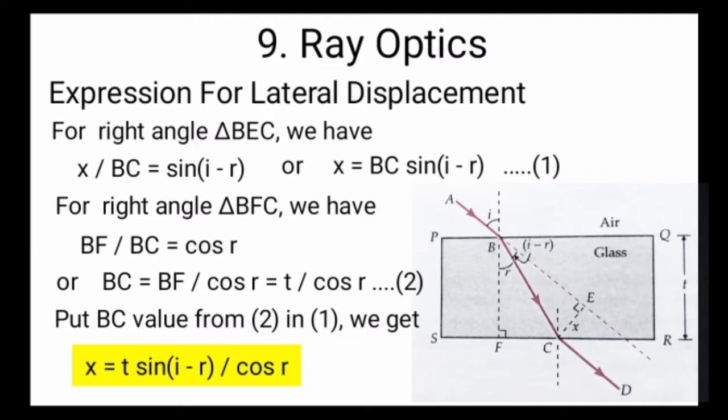The expression for lateral displacement can be seen in this diagram. PQRS is a rectangular glass slab whose width is t. The incident angle is denoted by i and the refracted angle is denoted by r. We want to find the lateral displacement, which is denoted by CE, equal to x.